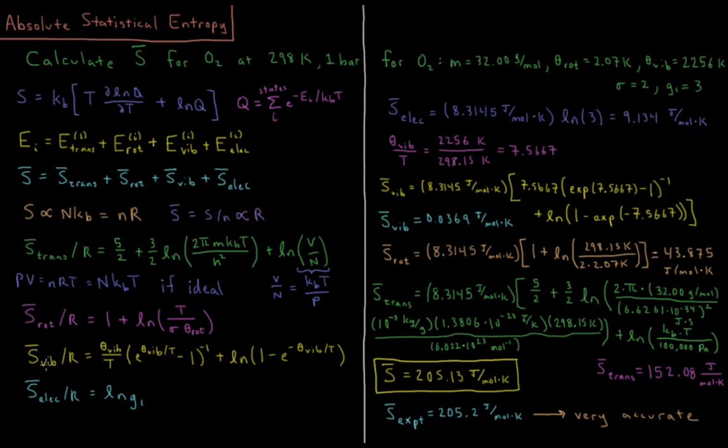The molar vibrational entropy divided by R is equal to the vibrational temperature, a quantity that we can look up in a table, divided by T times e to the theta vib over T minus 1 taken to the power minus 1, so 1 over this quantity. Plus the natural log of 1 minus e to the minus theta V over T.